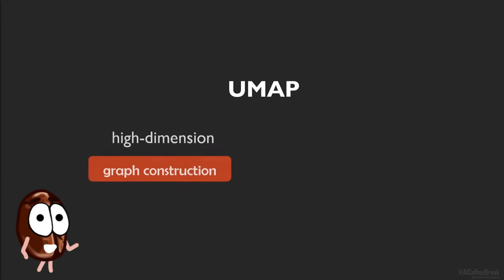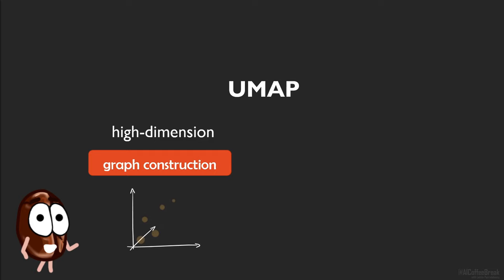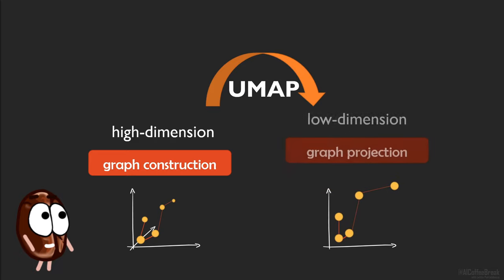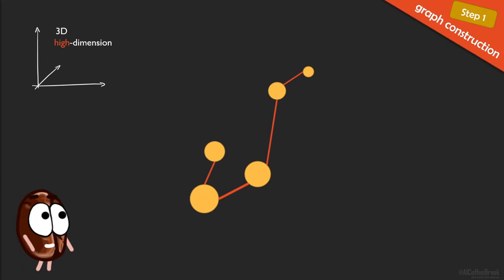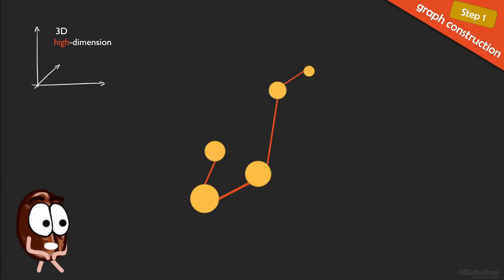The two steps of UMAP are high-dimensional graph construction and its mapping to a lower-dimensional graph. The construction of this high-dimensional graph is what makes UMAP so special compared to its competitors, since it's hard to do it right and fast. And the cool part about UMAP is that its steps are mathematically proven to work.